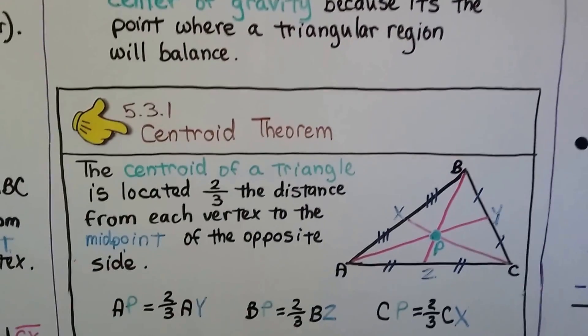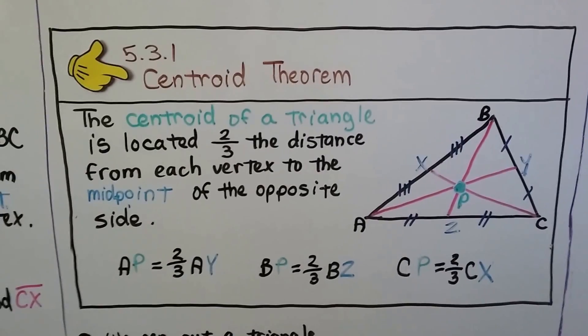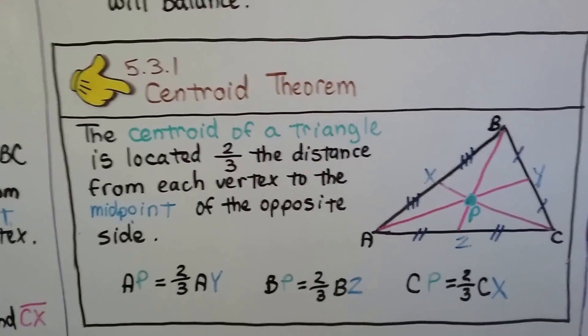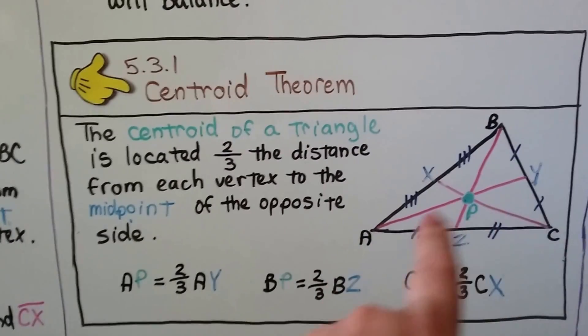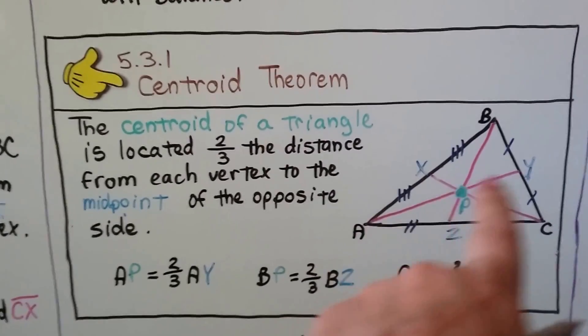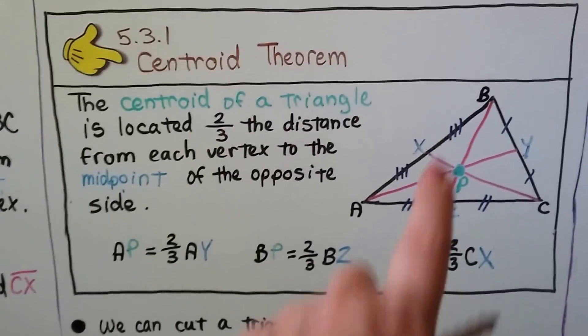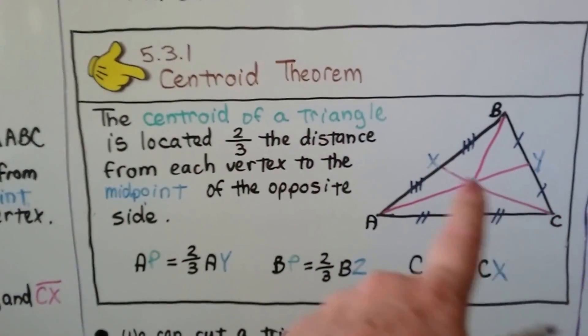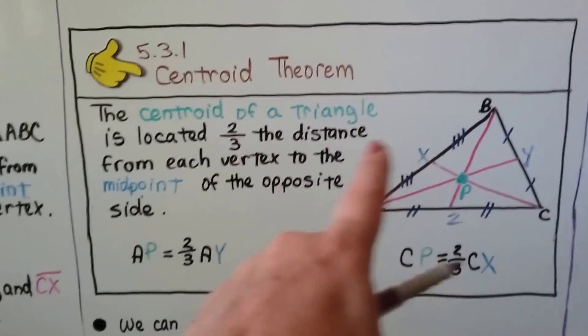So here's the centroid theorem. The centroid of a triangle is located two-thirds the distance from each vertex to the midpoint of the opposite side. So if you look at AP, this is two-thirds of AY. And if you look at BP right here, that's two-thirds of BZ. And CP is two-thirds of CX.